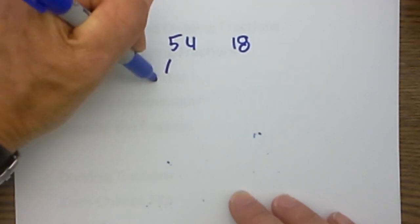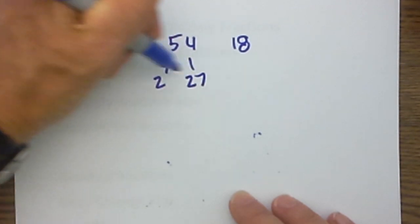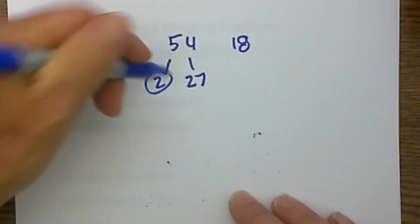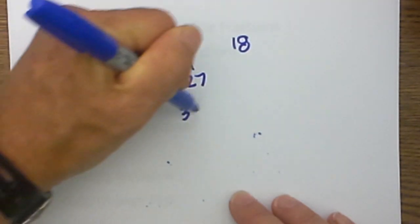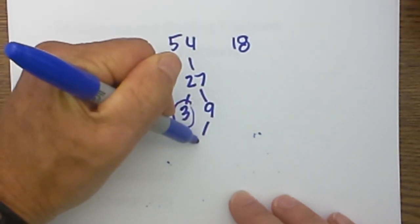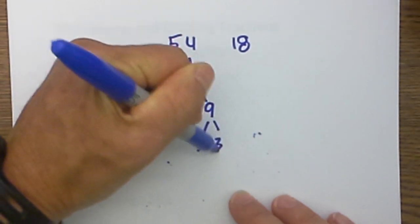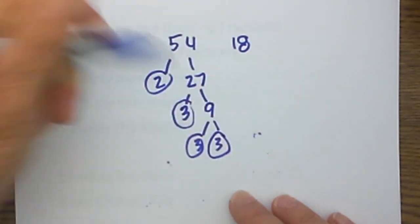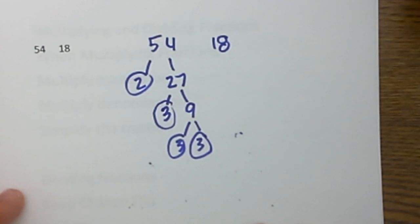So for 54, I will have 2 times 27. Circle the 2. And then 27 is equal to 3 times 9, so I will circle the 3 because that is a prime number. And 9 is equal to 3 times 3, and both of those are prime. So that is 54 factored.